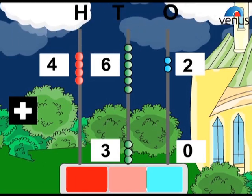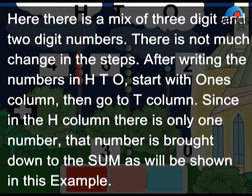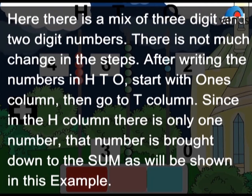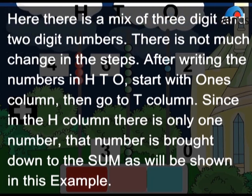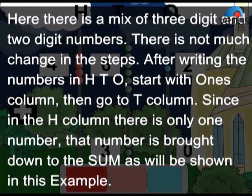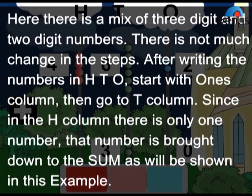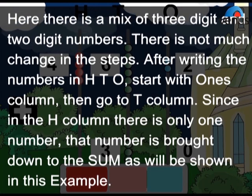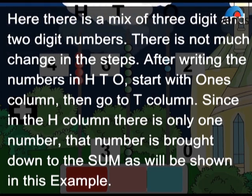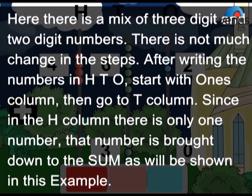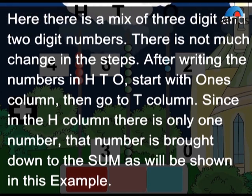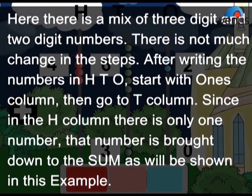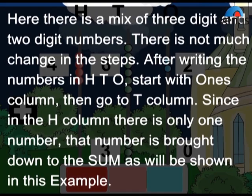There is not much change in the steps. After writing the numbers in H, T, O, start with ones column, then go to T column. Since in the H column there is only one number, that number is brought down to the sum as will be shown in this example.